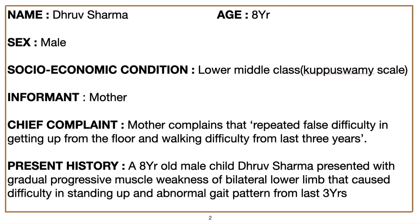General information includes the patient's name, gender, and age. If you are writing socio-economic condition, you can also write the grades of Kuppuswamy scale to make your assessment more informative. Now, as the patient is a child, the informant is the mother.